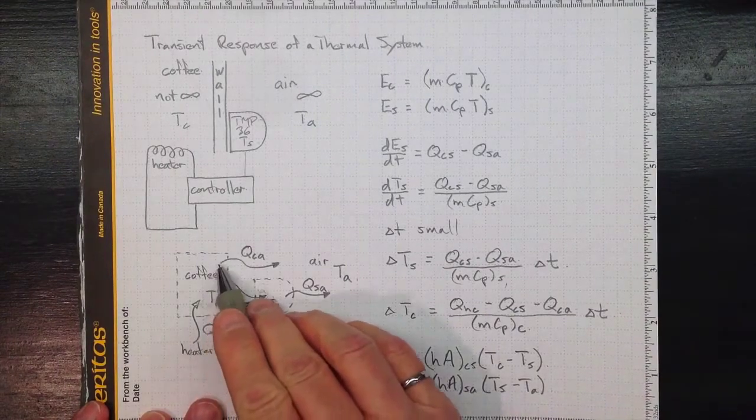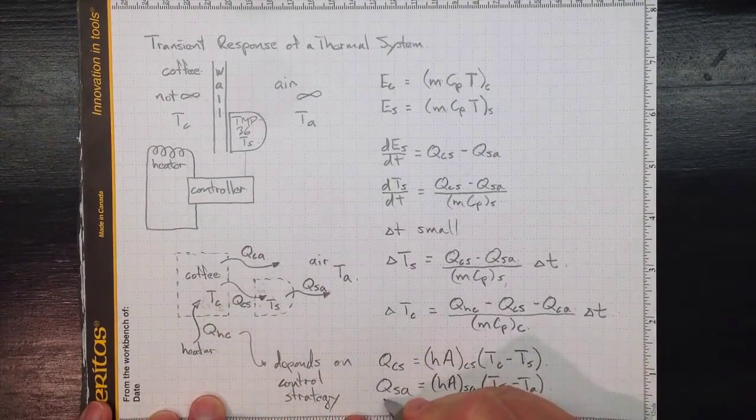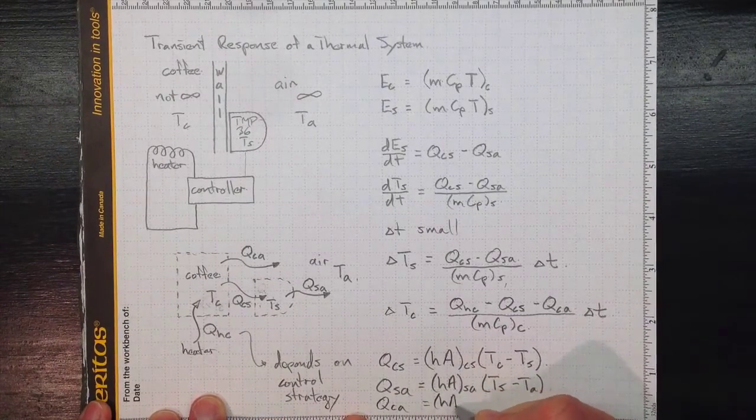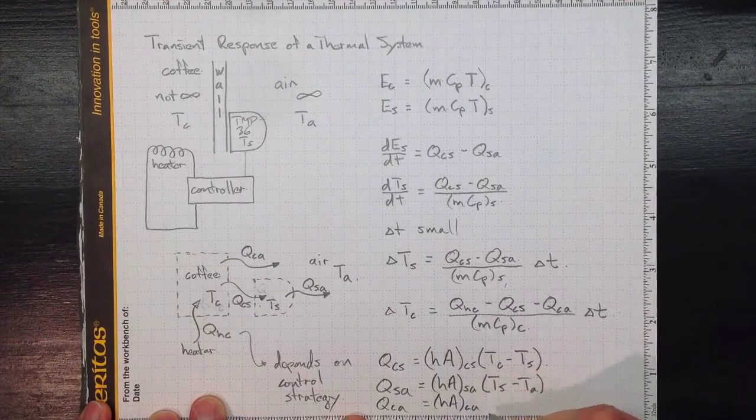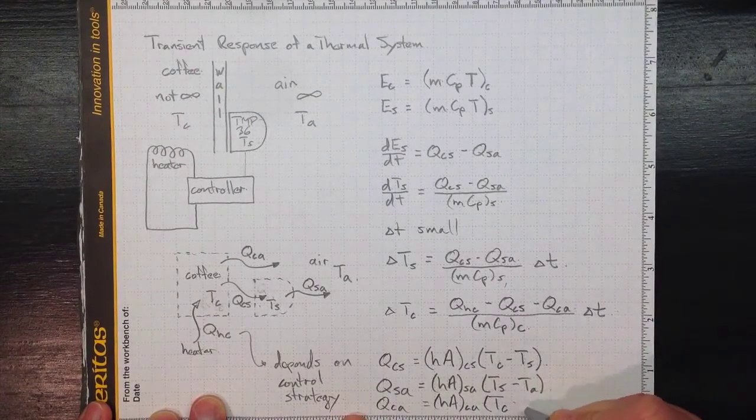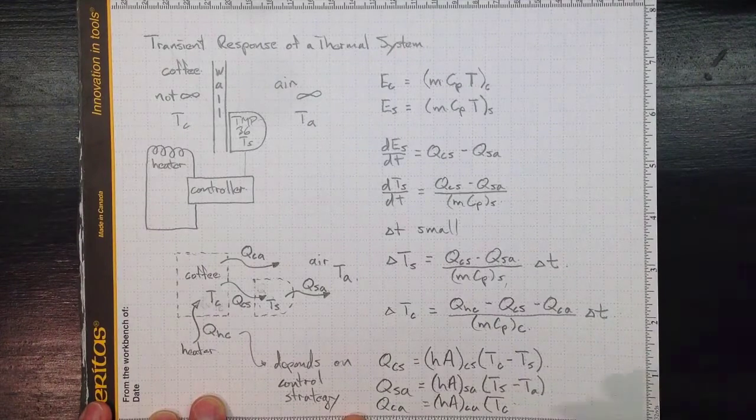And finally, from the coffee to the air will be H_A from the coffee to the air times the difference between the coffee temperature and the air temperature.